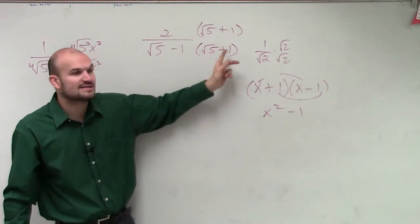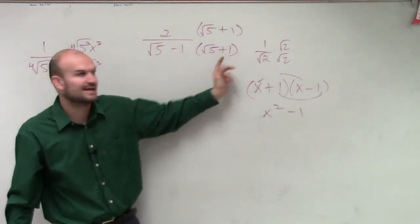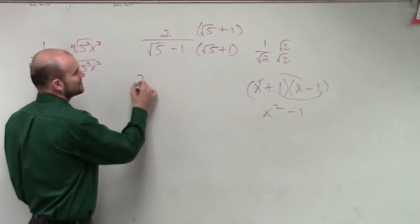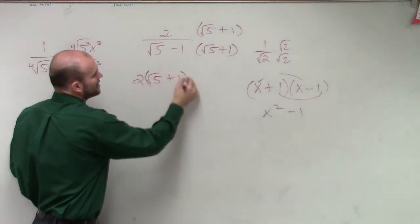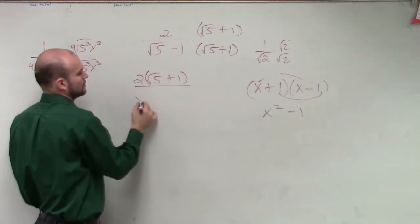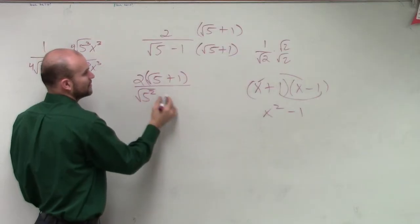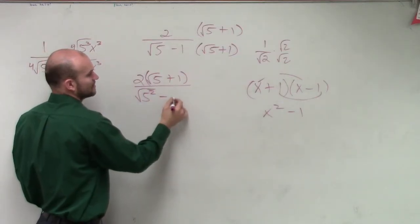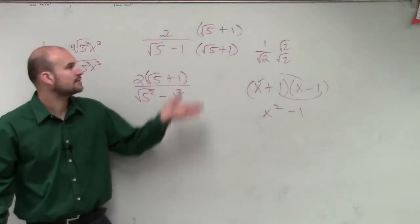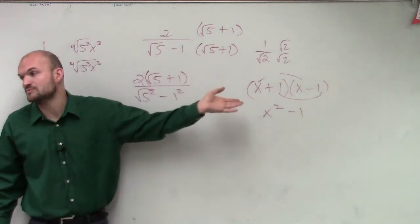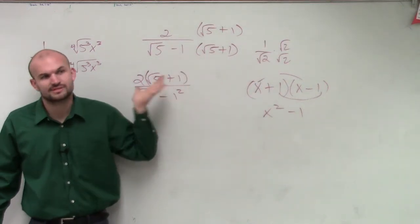And then negative 1 times 1 is going to leave me with a negative 1. So what I get is 2 times square root of 5, which is right out there, plus 1 over square root of 5 squared minus 1 squared. It's negative 1 times 1, which is 1 squared, but it's still just going to be negative 1.